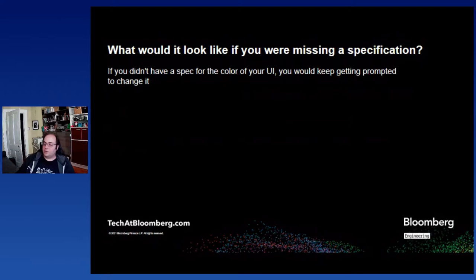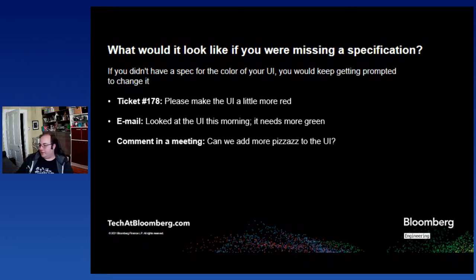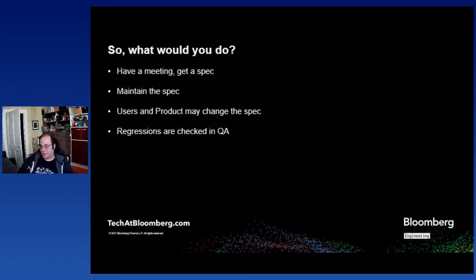So let's consider something. What would it look like if we were missing a specification for our system? If we didn't have a spec for the color of our UI, we'd keep getting prompted to change it. We'd get a ticket that says please make the UI a little more red. Then we get an email that says hey, I looked at the UI this morning, it needs a little bit more green. Next thing you know, you're in a meeting and someone says let's put a little more pizzazz in the UI. So what would you do? You'd call a meeting, get all the stakeholders together, and come up with a spec. Then you would maintain that spec. Users, the product team, whoever owns it, may change that spec over time. But if it changes without an intentional change, then in your QA process, you're going to call it a regression and you're going to fix it.